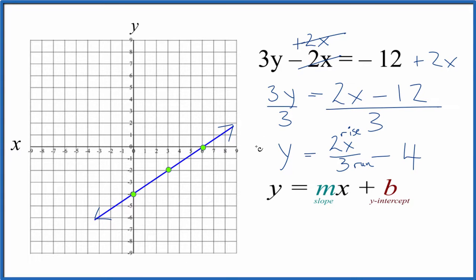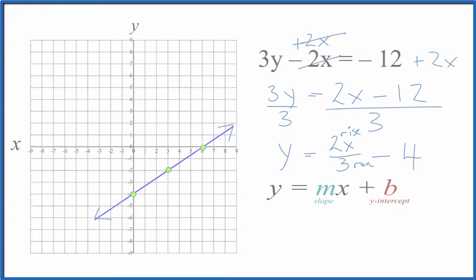You could also use a table of values where you put in points for y, find points for x, and graph those. That would give you the same line. If you need help with that, there's a link at the end of this video. This is Dr. B graphing the equation 3y - 2x = -12. Thanks for watching.